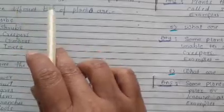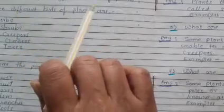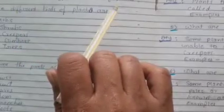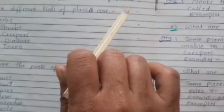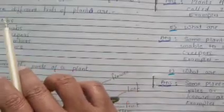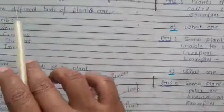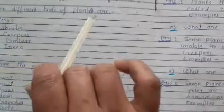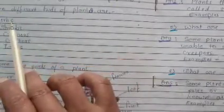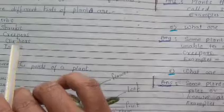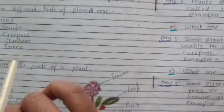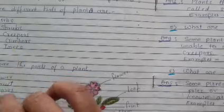What are the five different kinds of plants? Answer: Five different kinds of plants are herbs, shrubs, creepers, climbers, and trees.